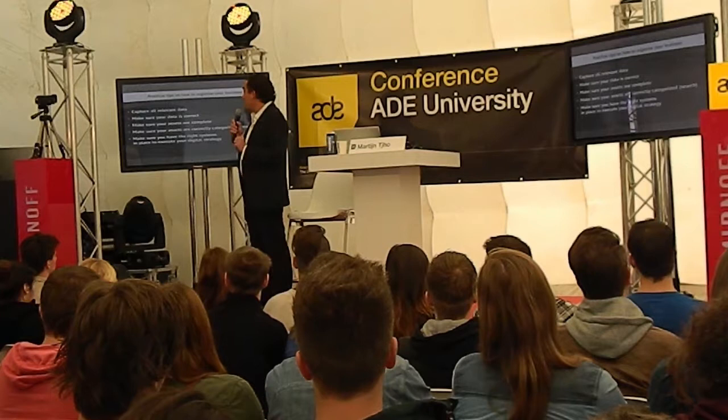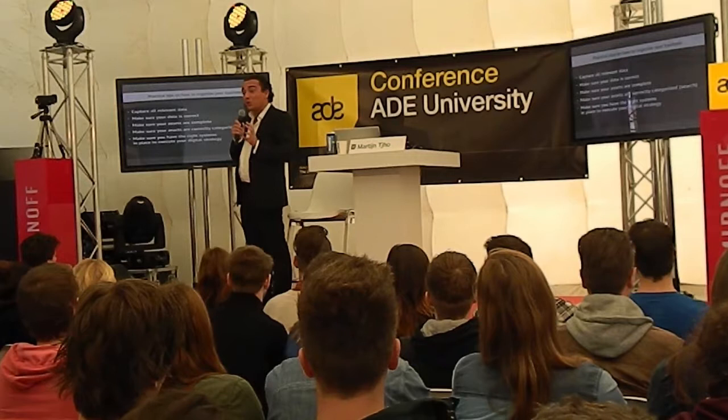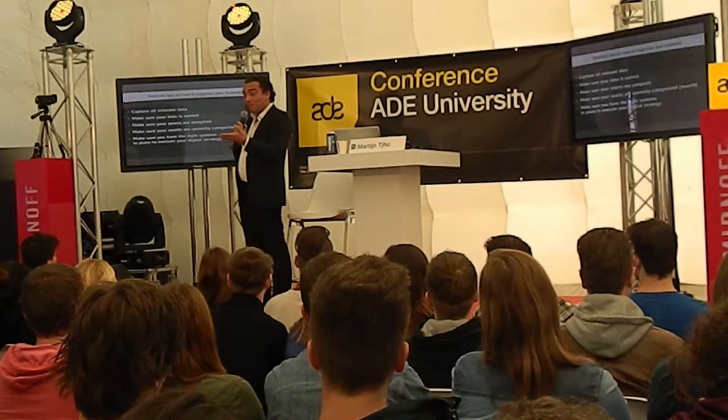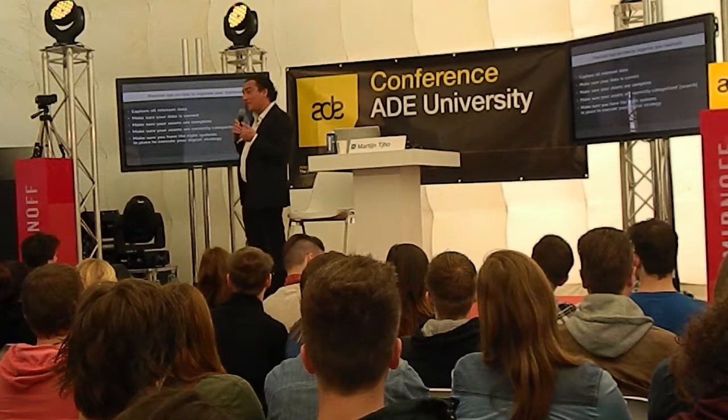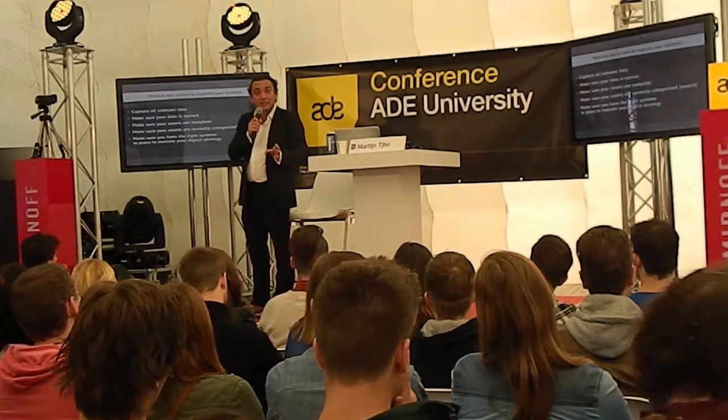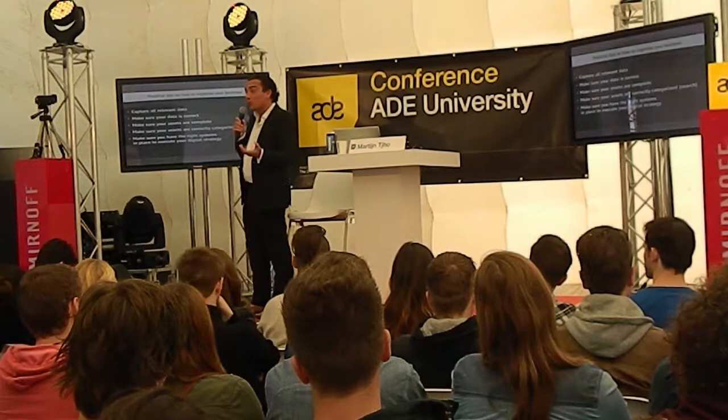Data correctness is critically important. Imagine iTunes with 30 million songs in its library. If the metadata is not correct — if Metallica is spelled with an error — nobody is going to find it. If there are spelling errors or artist names are wrong, your product goes out there, nobody can find it, and when money and reports come back, it's impossible to administer.